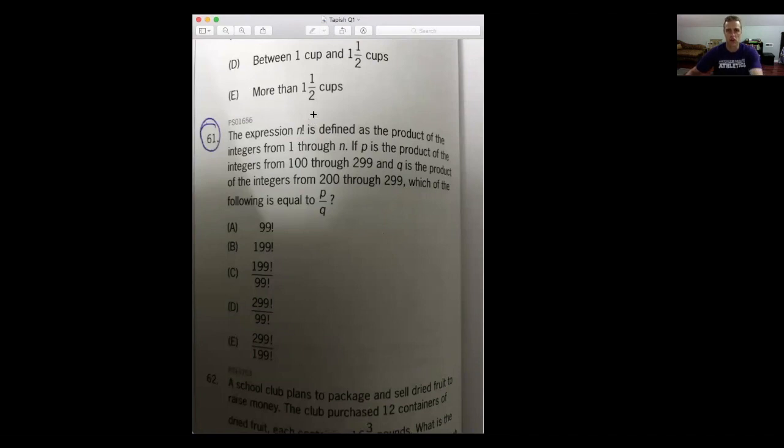I'm going to go back to the whiteboard here in a minute. The question says the expression n factorial—n with an exclamation point. They're being nice to us by giving us the definition, but we know that's a factorial. n factorial is defined as the product of all the integers from 1 until n. We see this in combinatorics, permutations, combinations, where 5 factorial, for example, is 1 times 2 times 3 times 4 times 5.